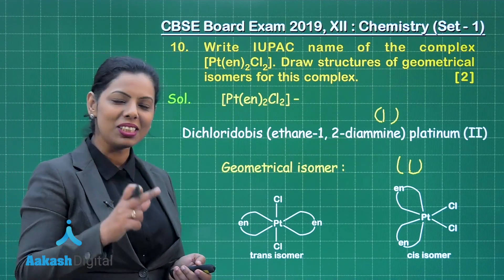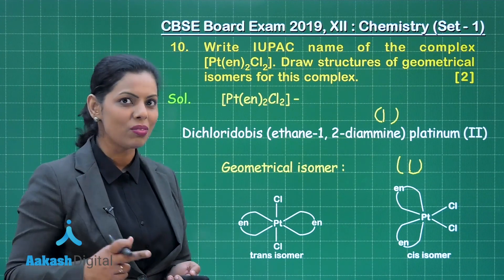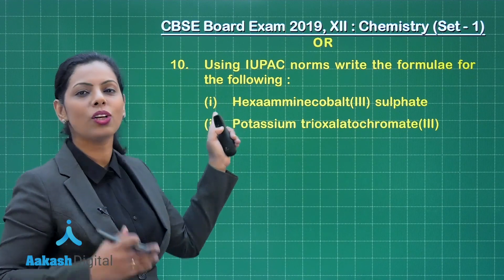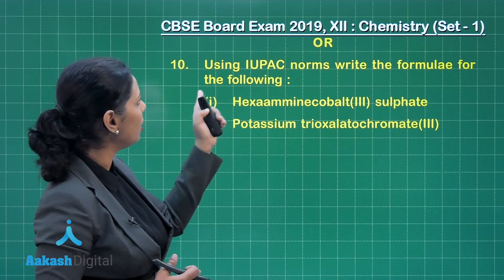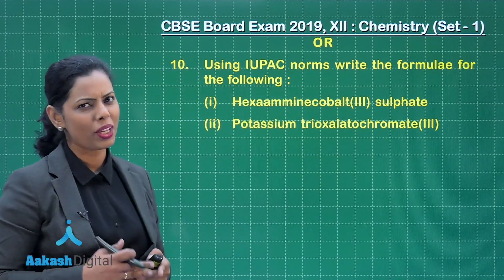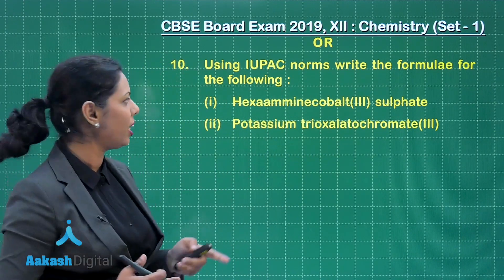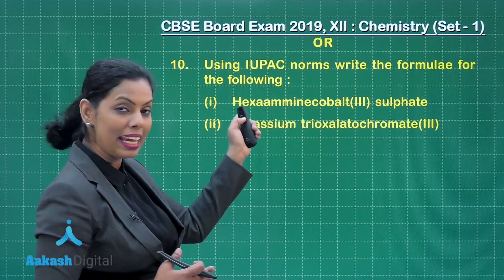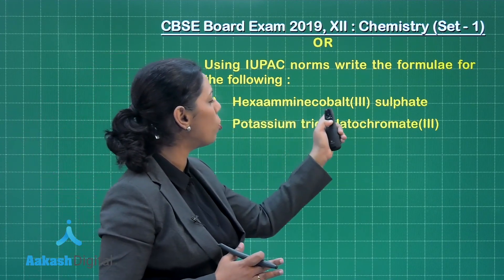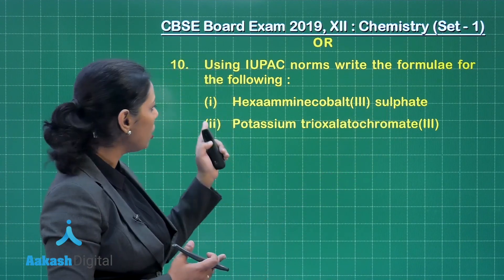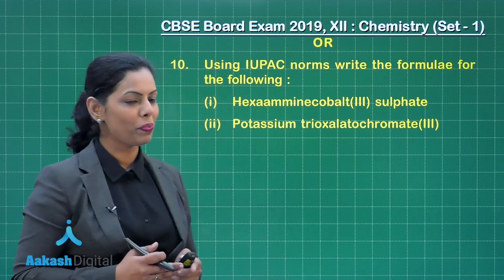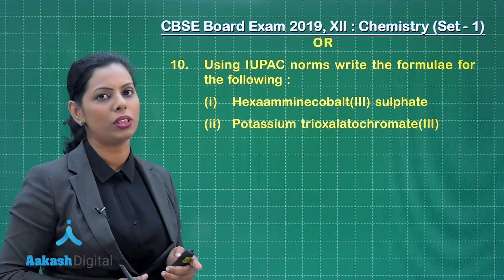This question also has an internal choice. If you attempt the second part, that can also give you 2 marks. Using IUPAC norms, write the formula of the following — another question based on coordination chemistry where the complex name is given and you have to write its formula. The two compounds are hexaaminecobalt(III) sulfate and potassium trioxalatochromate(III).